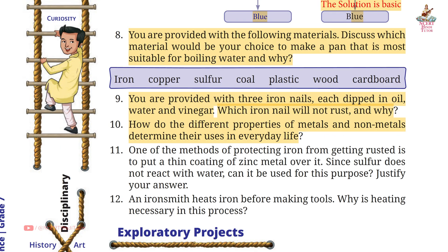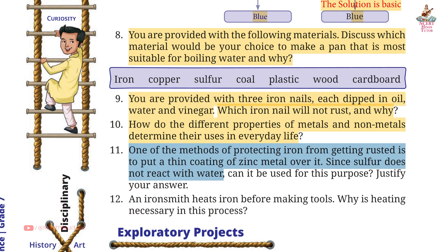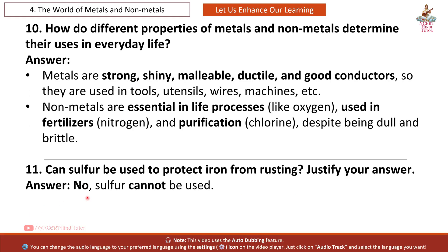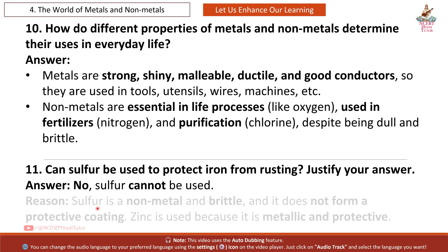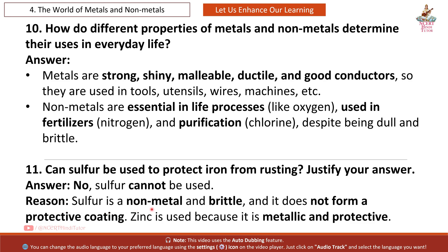Question 11: One method of protecting iron from rusting is to put a thin coating of zinc over it. Since sulfur does not react with water, can it be used for this purpose? Answer: No, sulfur cannot be used. Reason: Sulfur is a non-metal and brittle; it does not form a protective coating. Zinc is used because it is metallic and protective.